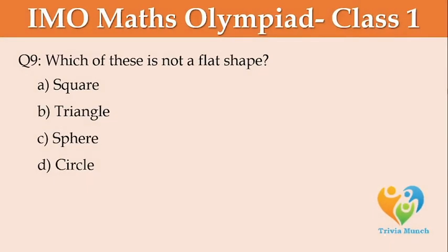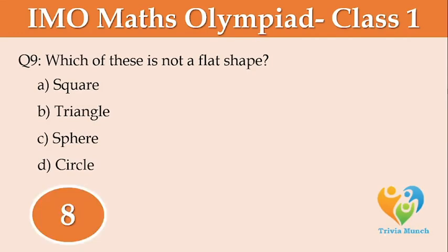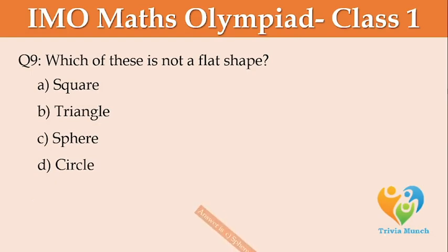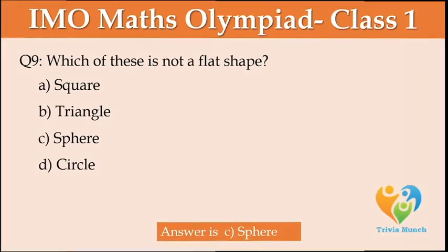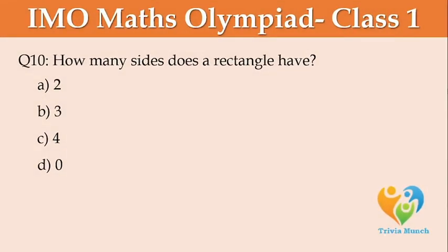Which of these is not a flat shape? Option A: Square, Option B: Triangle, Option C: Sphere, Option D: Circle. How many sides does a rectangle have? Option A: 2, Option B: 3, Option C: 4, Option D: 0.